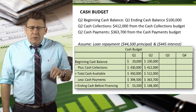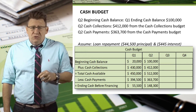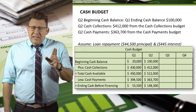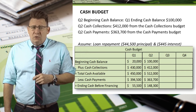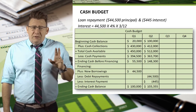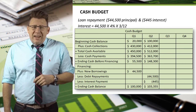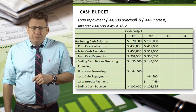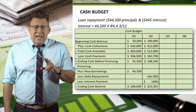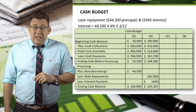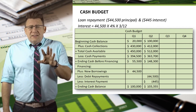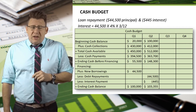For Q2, we add the Q2 cash collections and subtract the Q2 cash payments to get the ending cash balance before financing. Since the ending balance looks sufficient to pay off the loan, we subtract the principal payment of $44,500 and an interest payment of $445. Interest is calculated as $44,500 times 4% annual interest times 3/12, since one quarter equals three-twelfths of the year, giving an ending cash balance of $103,355.